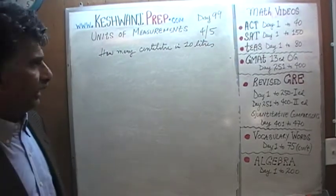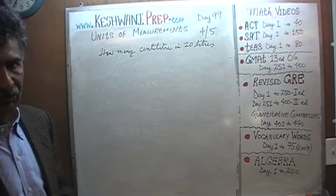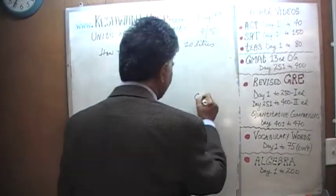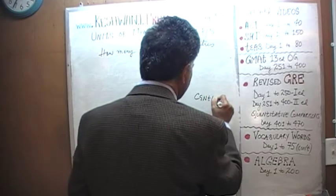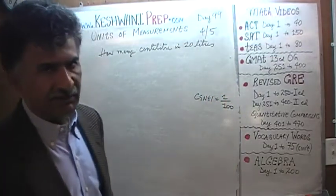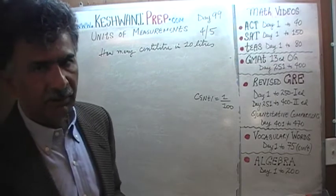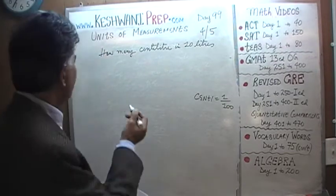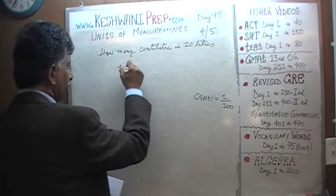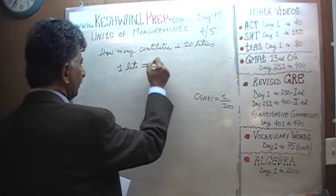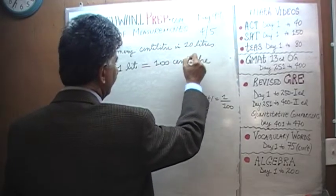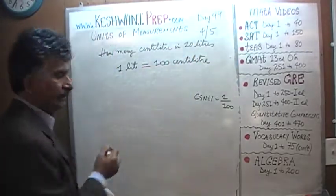We learned on day number 96 that a centilitre is so-called because the prefix 'centi' means 100. Whenever we see the prefix centi with anything at all, it just means 100. How many centiliters in 10 liters? We know 1 liter has to be made up of 100 centilitres — that's why it's called centilitre.